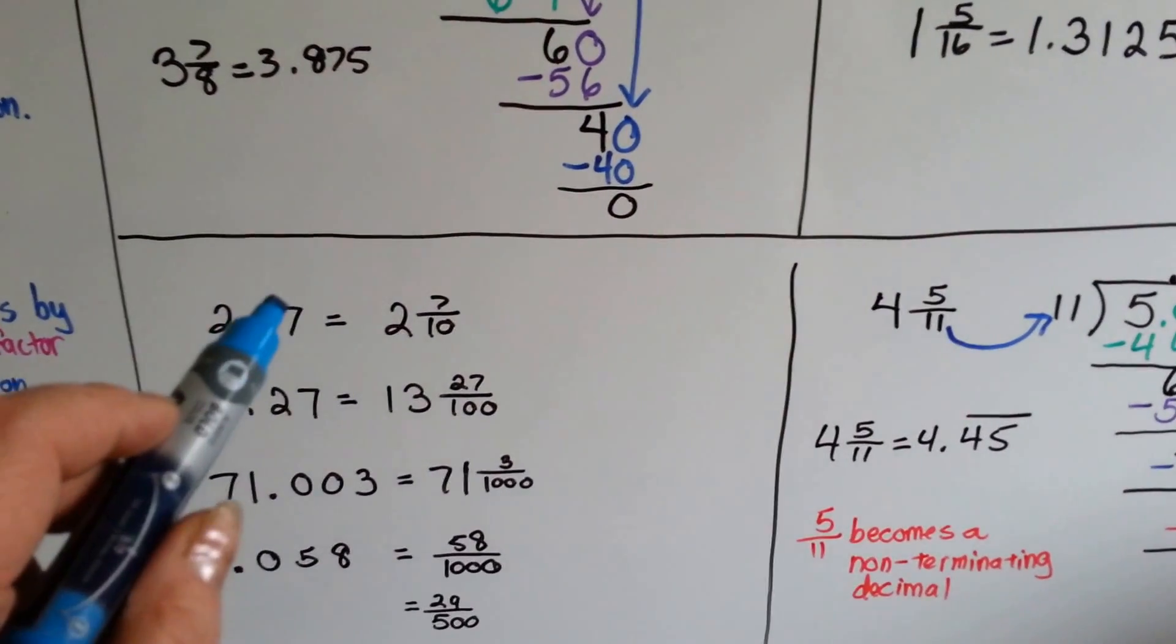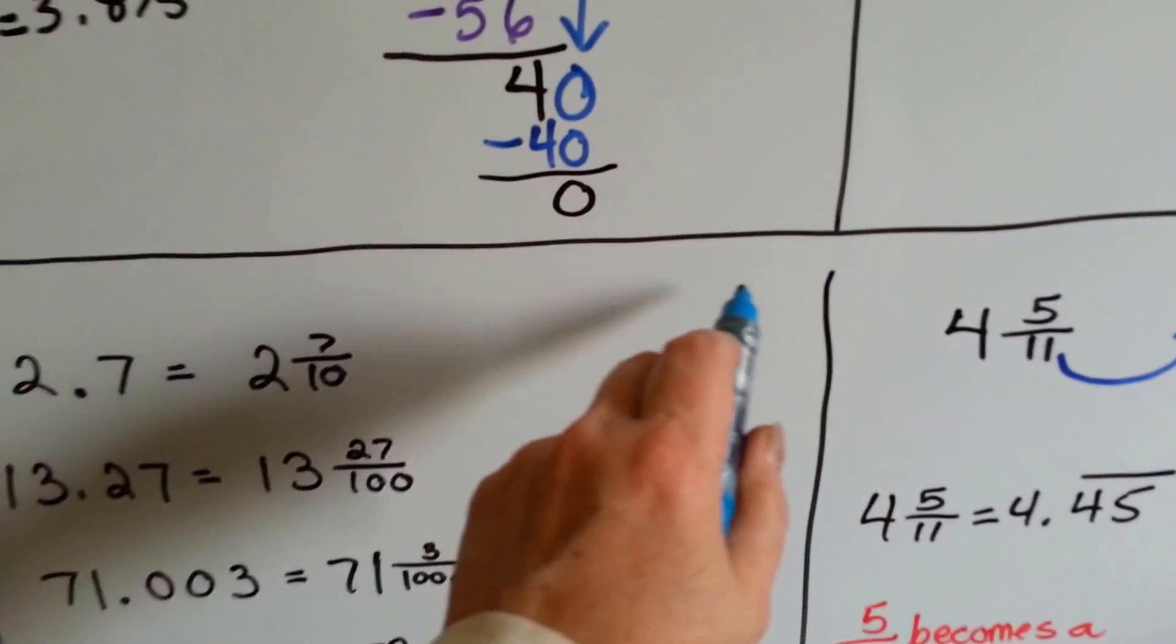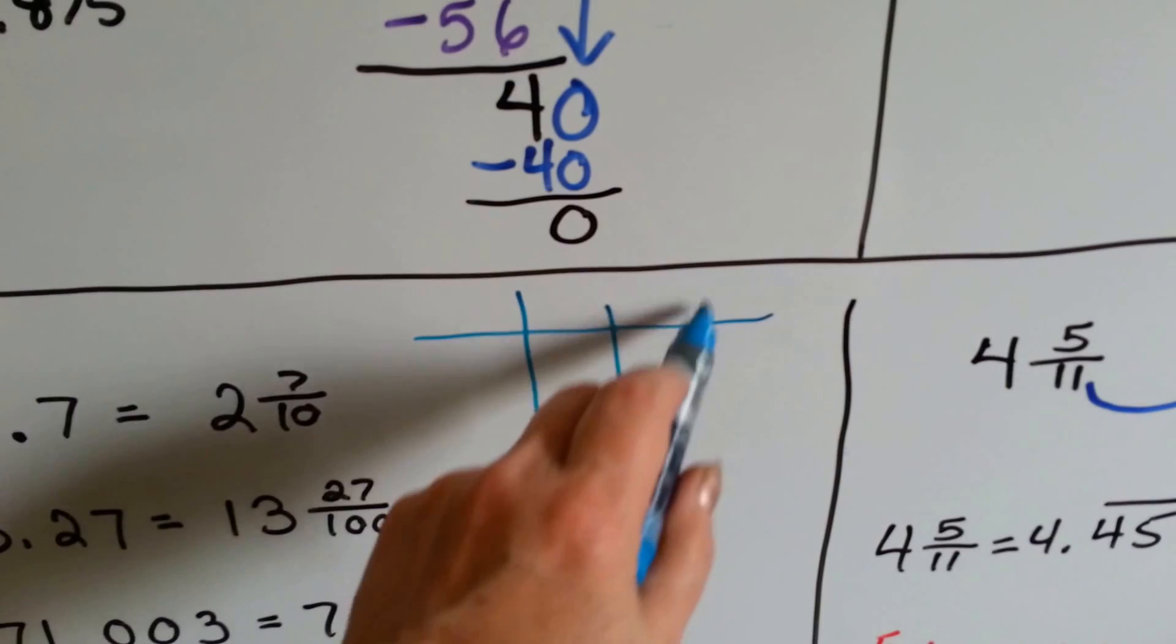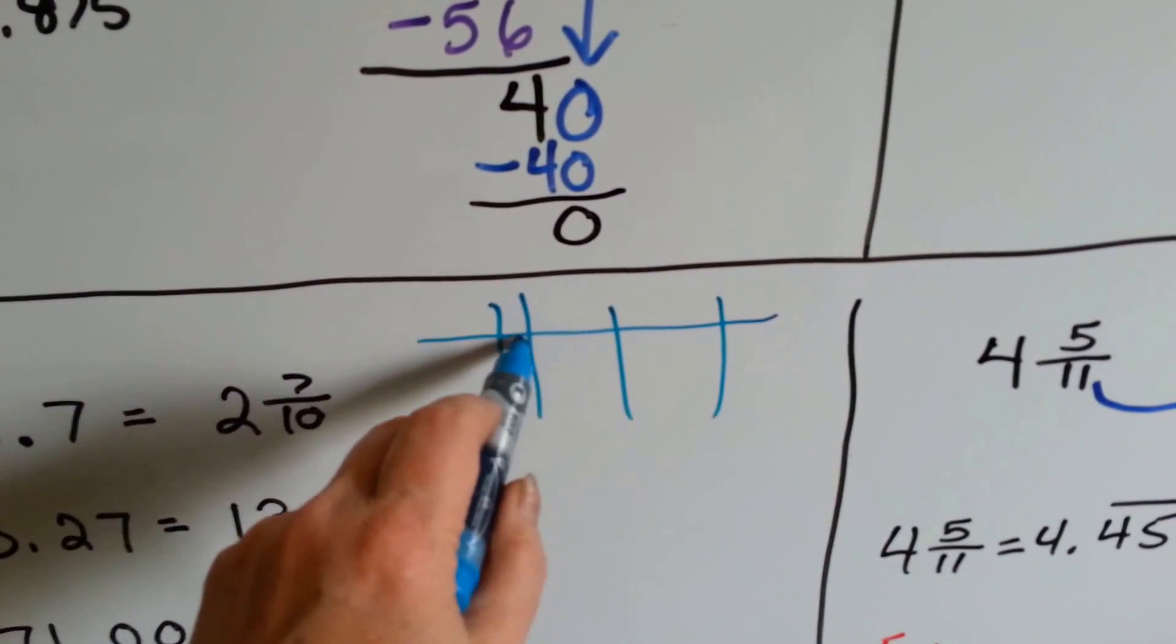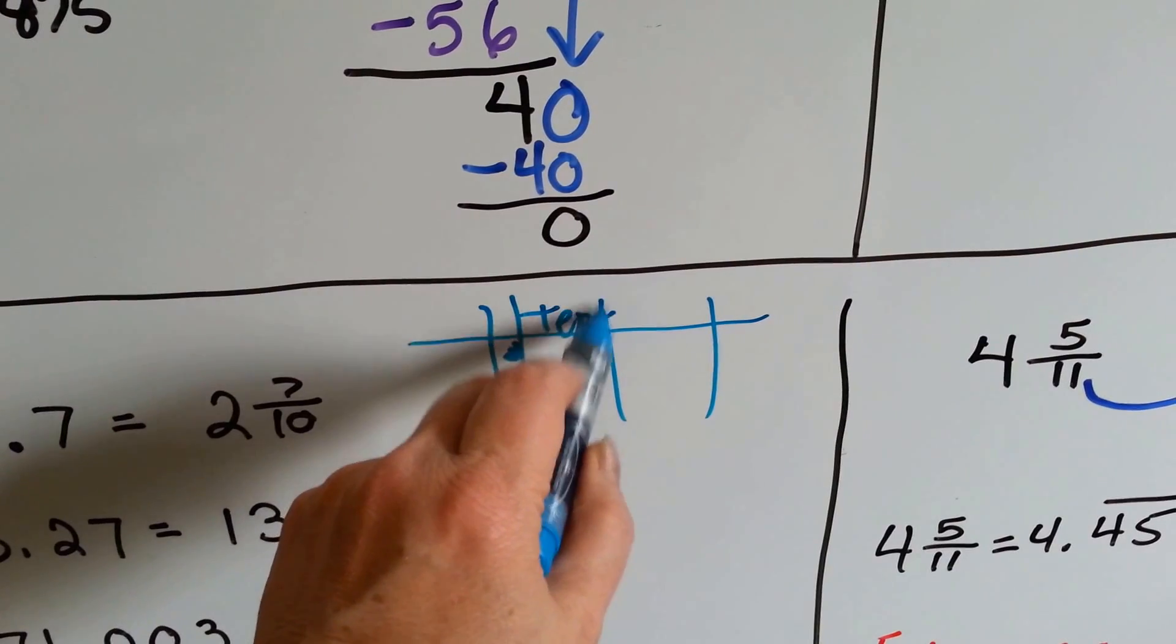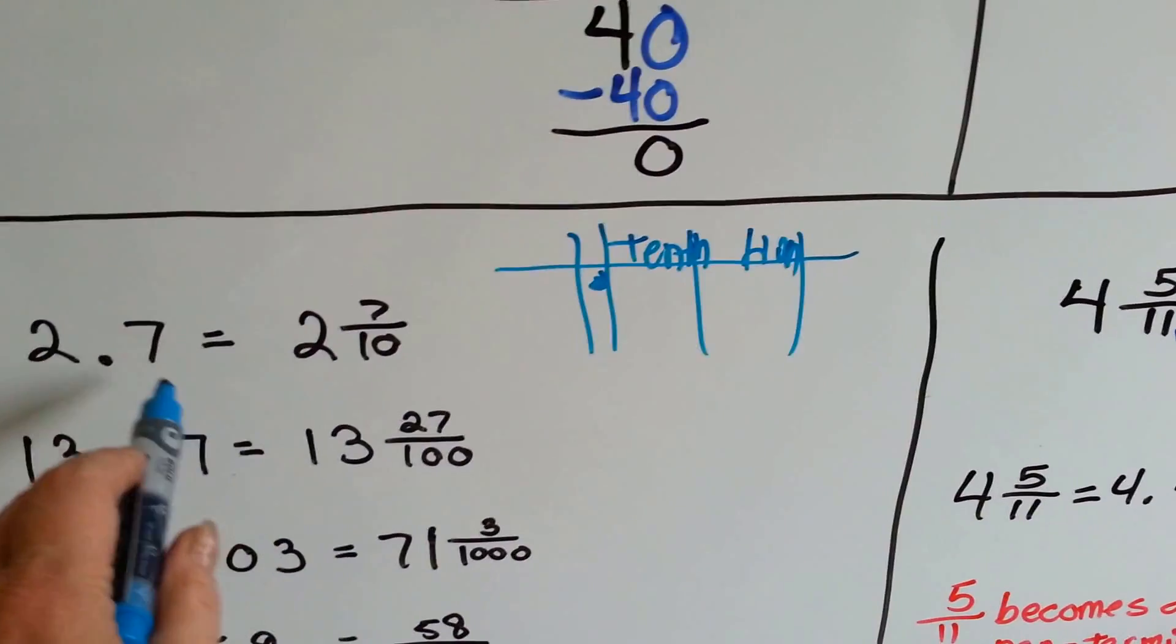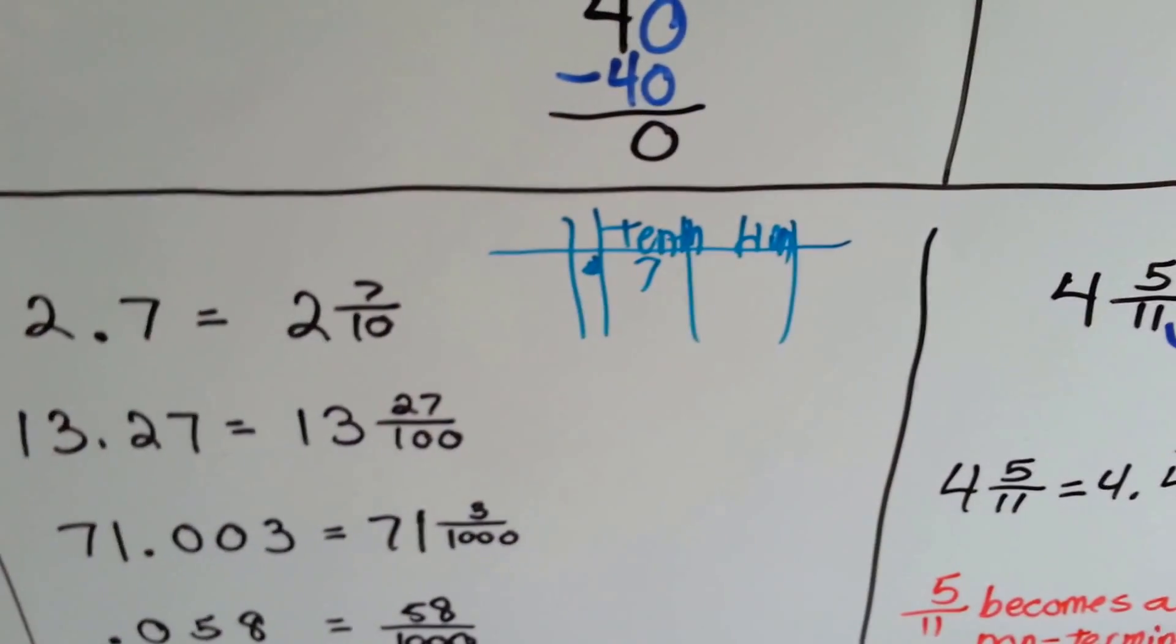We have 2.7. If we want to change it into a fraction, it's very easy because we just use place value. We know in the place value chart that this is the tenths and this is the hundredths. So if we want to do 7/10, it's just .7.